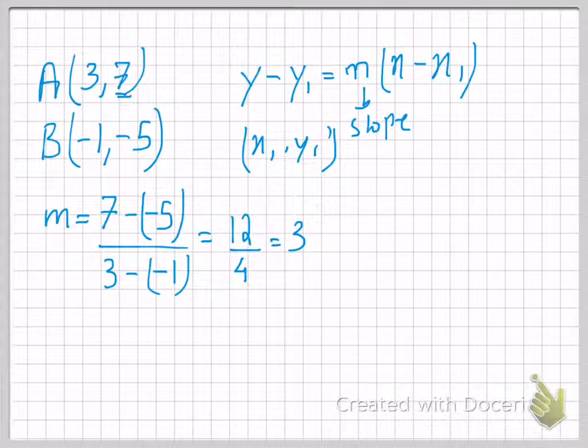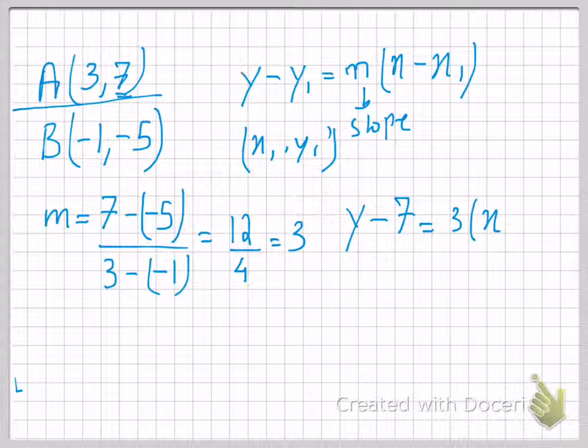Now, let's figure out the equation. Now, this point that I'm going to be using is A. So, y minus 7 will become y1 is equal to 3x minus 3. 3 will become x1. I could have used point B as well, and the equation would have remained the same.